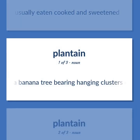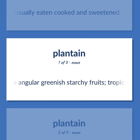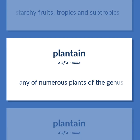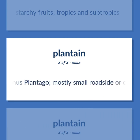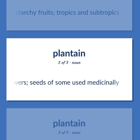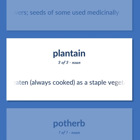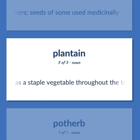Plantain: A banana tree bearing hanging clusters of edible angular greenish starchy fruits, found in the tropics and subtropics. Also, any of numerous plants of the genus Plantago — mostly small roadside or dooryard weeds with elliptic leaves and small spikes of very small flowers, seeds of some used medicinally. Starchy banana-like fruit, eaten always cooked, as a staple vegetable throughout the tropics.